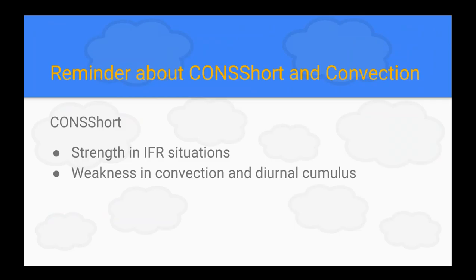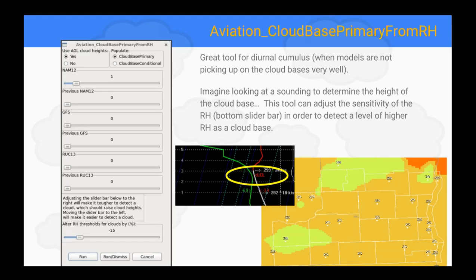We are getting out of winter and into summer season. CONSHORT is really good with IFR situations — it verifies well and gives you a great starting point for forecasting. However, CONSHORT does struggle with diurnal cumulus, especially, and convective situations. There is a tool available to help in those situations called Cloud-Based Primary from RH. Everyone has it installed in their populate menu of GFE, and it's a great tool to use for diurnal cumulus. Run it only for the time period where you're expecting diurnal cumulus — for example, 15Z to 0Z.